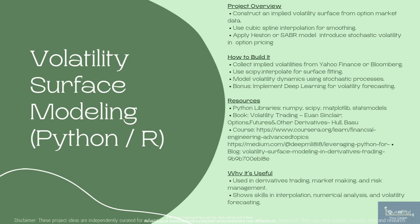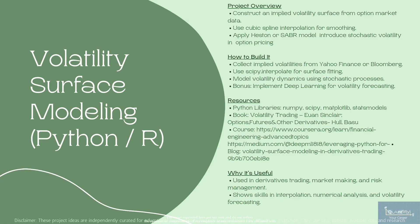For those interested in derivatives trading or market making, volatility surface modeling is another highly relevant project. You'll collect implied volatility data from options markets and use it to construct a volatility surface. Apply interpolation techniques like cubic splines to smooth the surface and model volatility dynamics with models like Heston or SABR. You can also use advanced statistical tools in Python and explore deep learning techniques to forecast volatility.